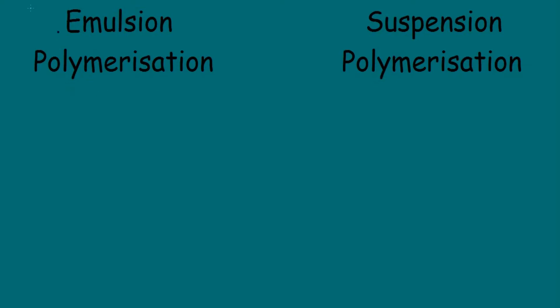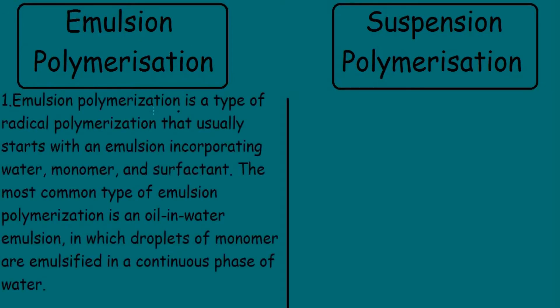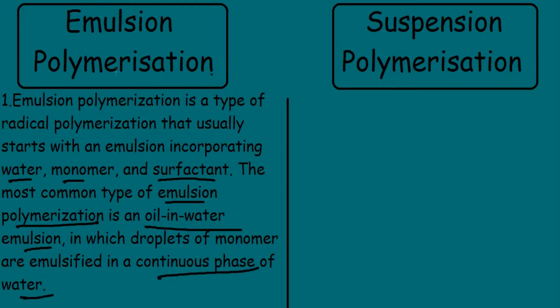Today we shall be studying about emulsion polymerization and suspension polymerization. Emulsion polymerization is a type of radical polymerization that usually starts with an emulsion incorporating water, monomer, and surfactant. The most common type is an oil-in-water emulsion in which droplets of monomer are emulsified in a continuous phase of water. Let's understand how this emulsion polymerization technique is carried out.